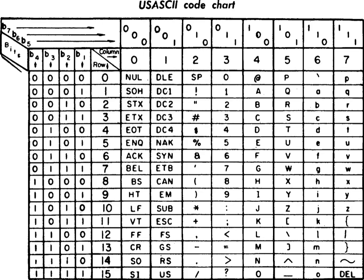The X3.2 subcommittee designed ASCII based on the earlier teleprinter encoding systems. Like other character encodings, ASCII specifies a correspondence between digital bit patterns and character symbols. This allows digital devices to communicate with each other and to process, store, and communicate character-oriented information such as written language.